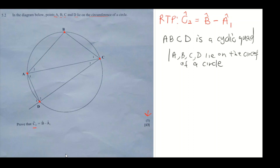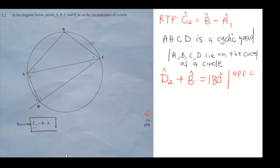The main aim here is that we are interested in only angle C2, angle B, and angle A1. So whatever solution you're working towards must give you those letters — any other letter is redundant. The first thing we're going to do is say angle D2 plus angle B equals 180 degrees. The reason is opposite angles of a cyclic quadrilateral are supplementary — they add up to 180 degrees.